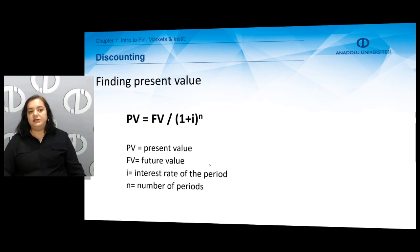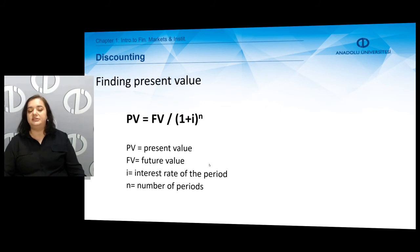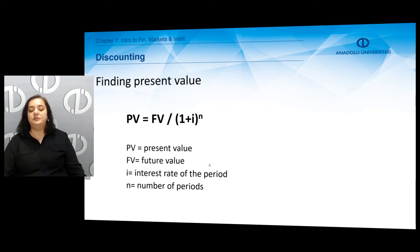Similarly, we can find the present value of some future value. If we expect to receive some amount of money in the future, we may wonder what it is worth as of today. In order to find the present value, we discount those future values by dividing the future amount by one plus the interest rate to the power n. So instead of multiplying as in compounding, when discounting we divide by one plus i to the power n.